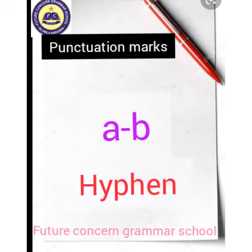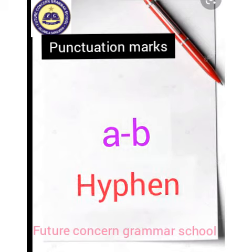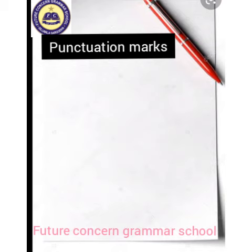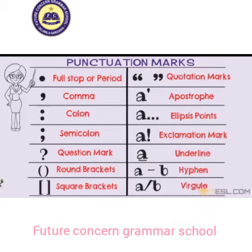This is called hyphen. And the last one, this is called virgule. So these are the 14 punctuation marks. Hope you understand this topic.